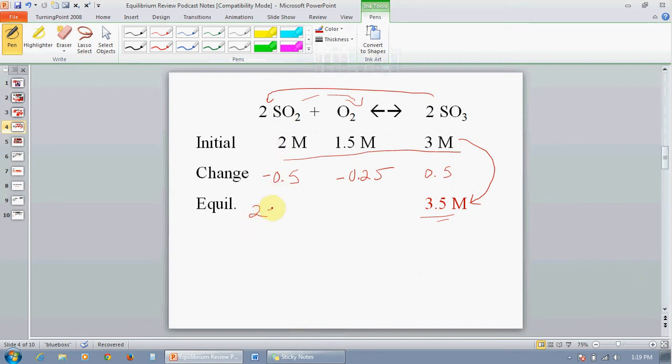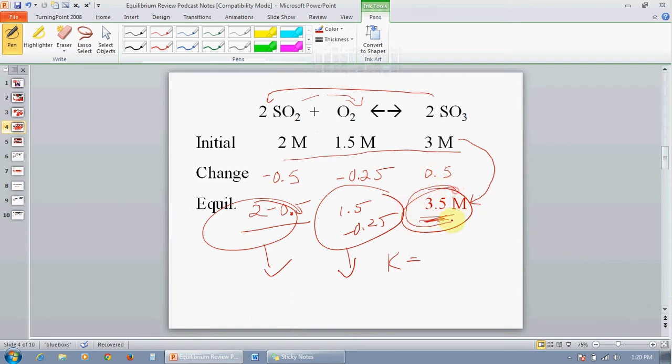You simply go in and define your equilibrium by subtracting the 0.5 and subtracting the 0.25, and you put those values in. You have now determined your equilibrium concentrations, and you can put them into the K expression and solve for K. This is one of the more straightforward types of problems, and one of the most common problems that you will see, where you've already been given an equilibrium concentration, and you're simply solving for the remaining.